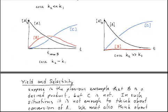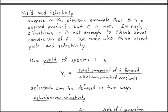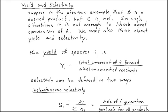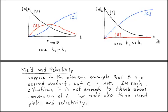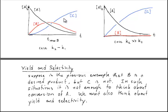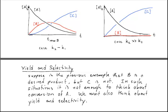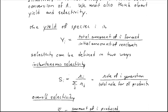So what if we were charged with taking a situation like this and maximizing the production of B, for example? Well, we would have to think about two quantities, yield and selectivity. So if B is our desired product and C is not in the previous example, then it's not really enough to just think about how much A we've converted, right? So obviously, if we wait long enough, we will turn all of our reactants into something else. But we want to choose the appropriate amount of time, for example, in this case, such that we've made a lot of B and very little C.